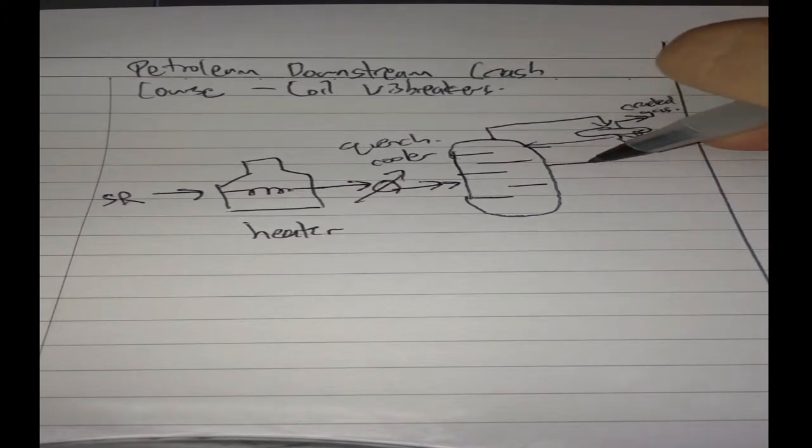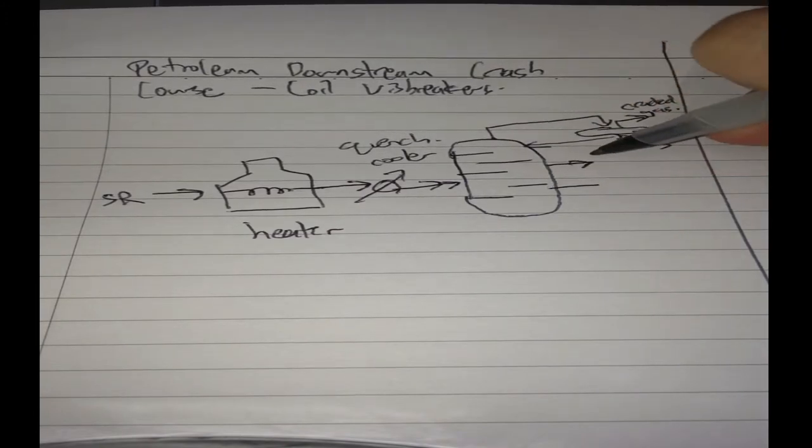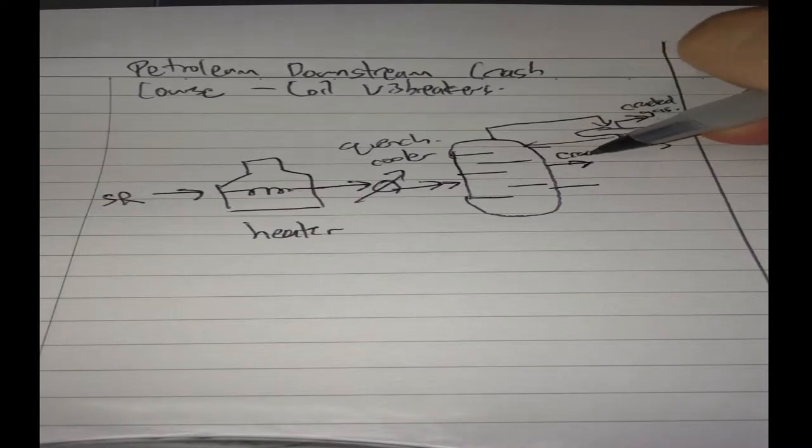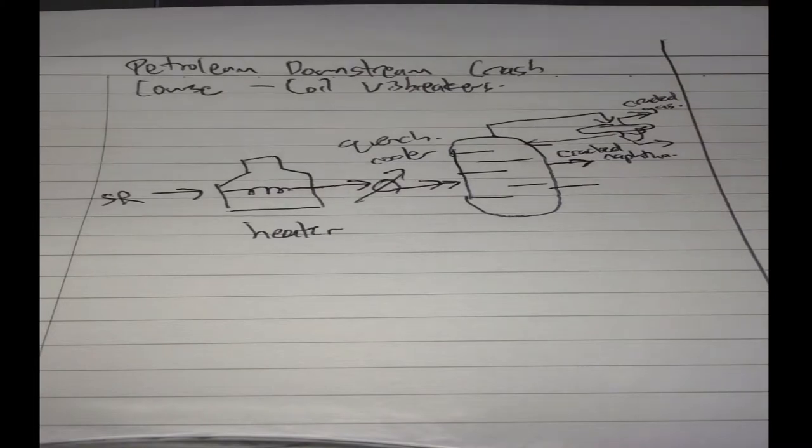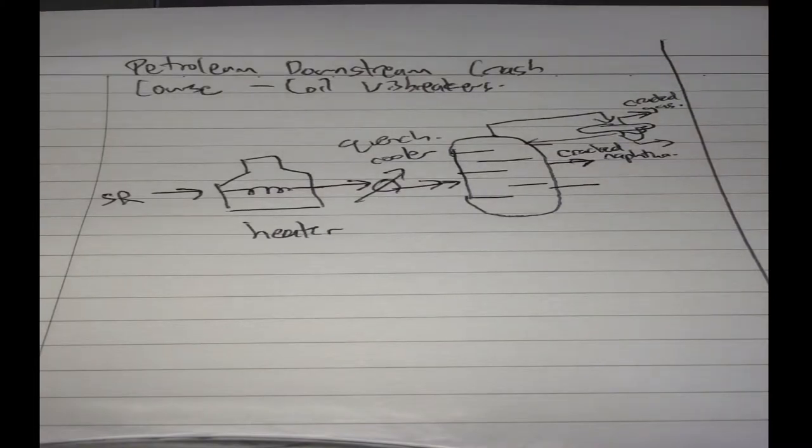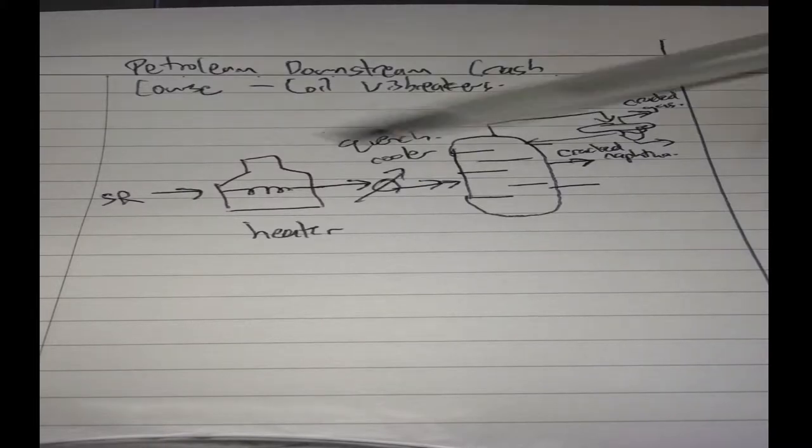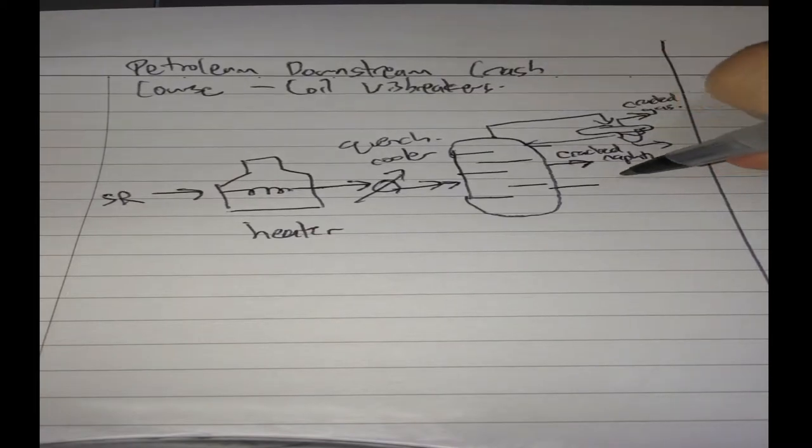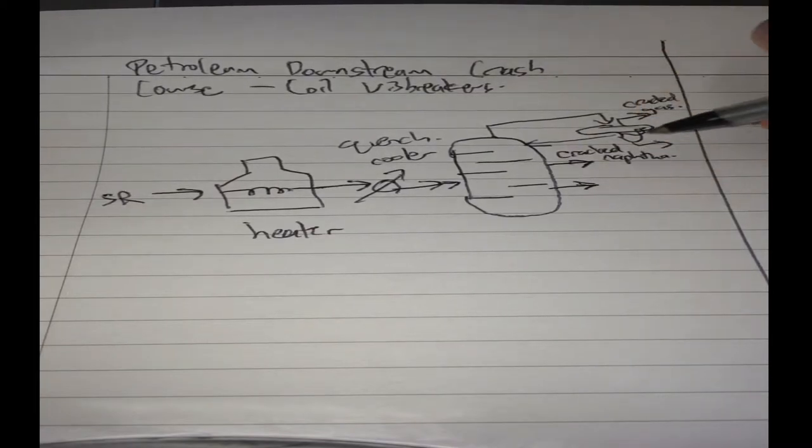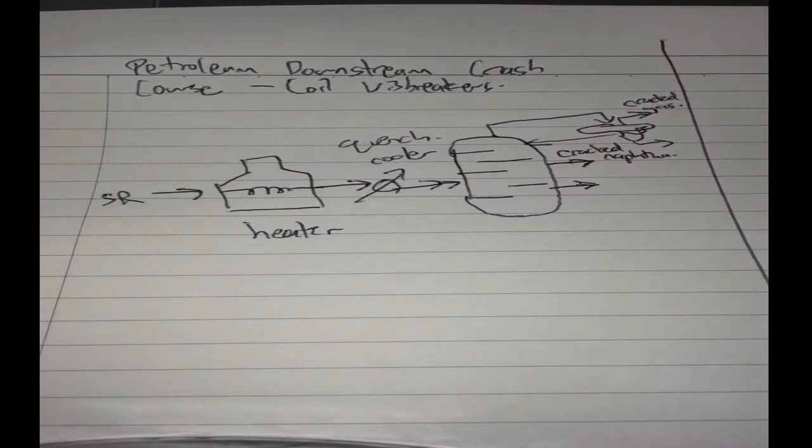So you'll have your usual side streams. Here they call it cracked naphtha to differentiate it from normal naphtha. And what's the difference? The chemical structure is different, so the hydrogen to carbon ratio is different. As a rule of thumb, cracked products usually have much lower hydrogen content and produce much smokier flames if you burn them, as compared to what you get straight from the crude distillation unit or CDU.